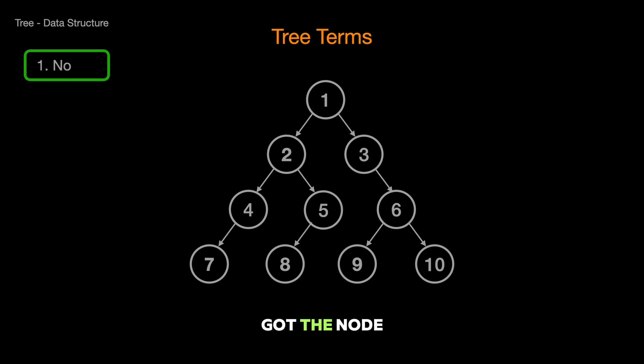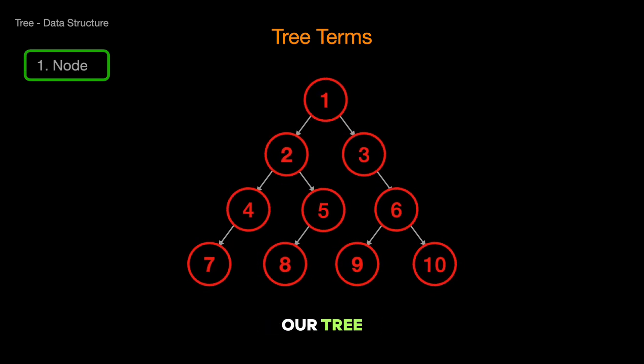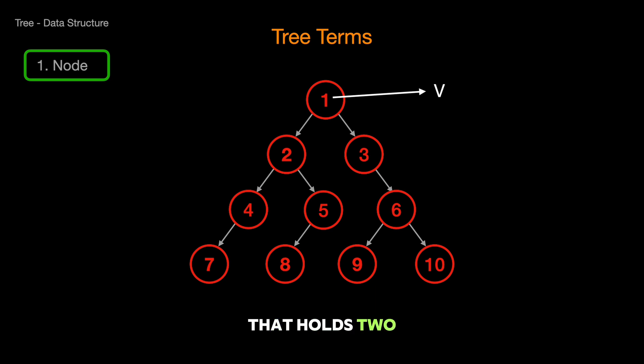First up, we've got the node, basic unit of our tree. Think of it as a container that holds two things. A value, which is the data we're interested in, and pointers, which are like arrows that direct us to other nodes in the tree. Every spot where you see a value in our tree diagram, that's a node.